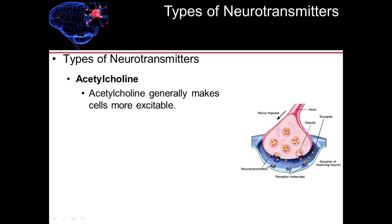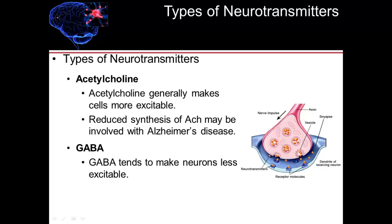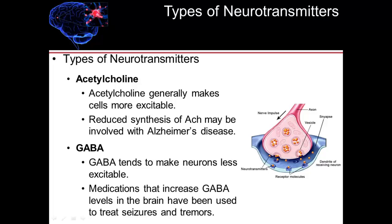Acetylcholine is one of the neurotransmitters. It's referred to as an excitable neurotransmitter because generally when it binds to its receptor, it makes cells more excitable. There are some disorders associated with acetylcholine deficits. One theory for Alzheimer's involves reduced synthesis of acetylcholine. Studies have also linked a deficit of acetylcholine to memory issues. GABA, which stands for gamma-aminobutyric acid, is a neurotransmitter that tends to make neurons less excitable when it binds to its receptors. Medications that increase GABA levels in the brain have been used to treat seizures as well as tremors.